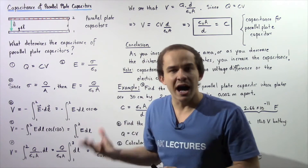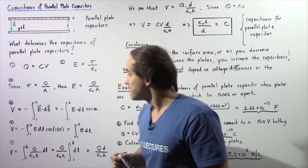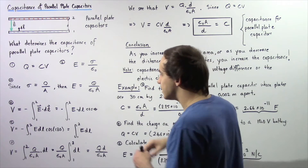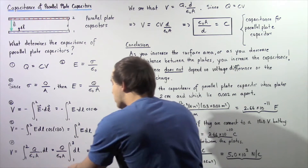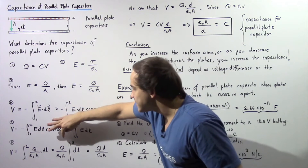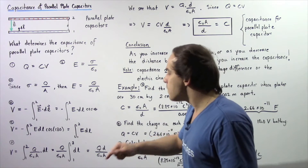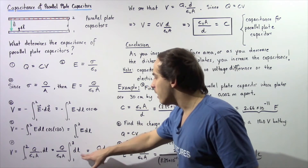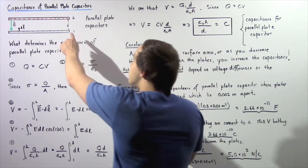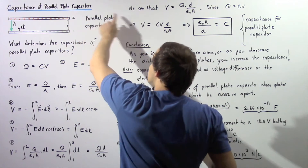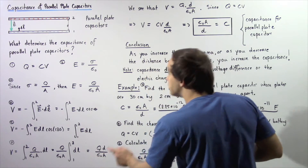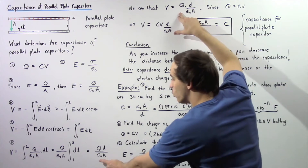We take this result and plug in E = Q/(ε₀A) for the electric field. Since Q, epsilon naught, and the surface area A are all constants, we take this ratio outside of the integral. The voltage difference between plates one and two therefore equals the constant Q/(ε₀A) multiplied by the integral of dl from plate one to plate two. Integrating gives us V = QD/(ε₀A).